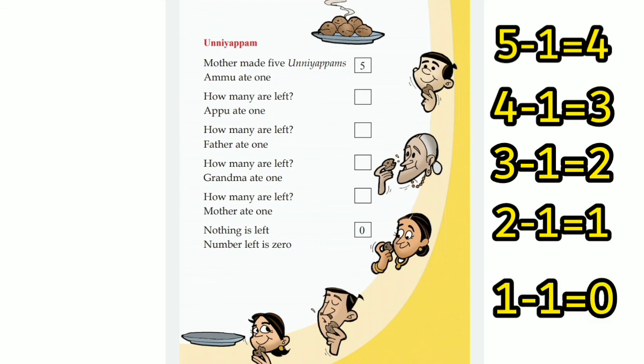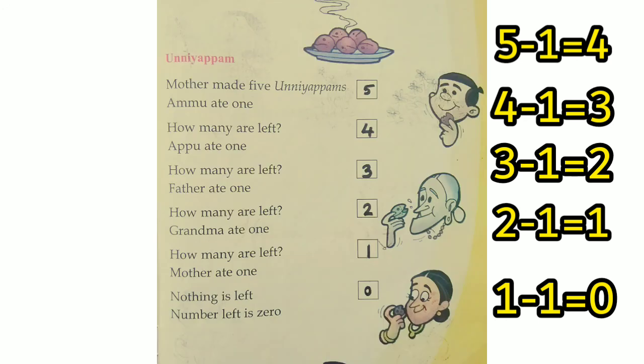Mother ate 1. So nothing is left. Now you have to write the answer here — 0 unniapams.